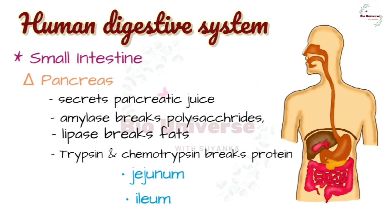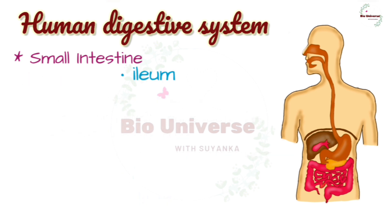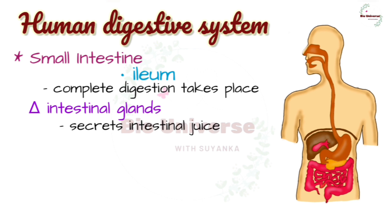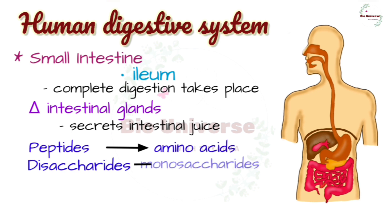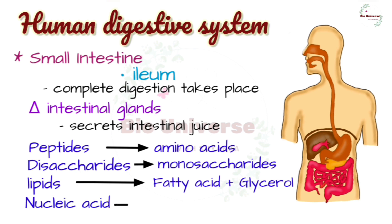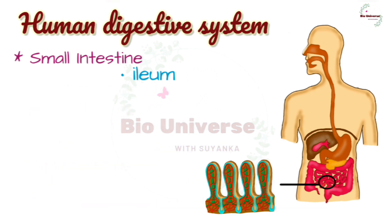The jejunum is the middle part of the small intestine and the ileum is the last main part. Complete digestion of remaining food materials takes place in the ileum. There are numerous small glands in the walls of the small intestine that secrete intestinal juice. The digestive enzymes in intestinal juice break small peptides into amino acids, disaccharides into monosaccharides, lipids into fatty acids and glycerol, and nucleic acids into nucleotides.